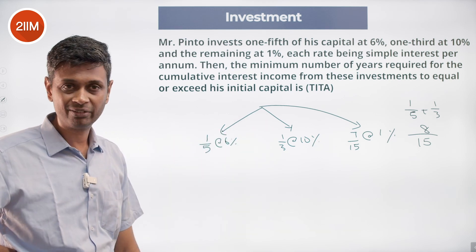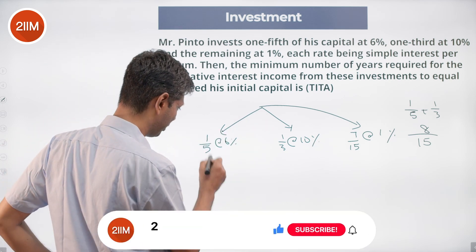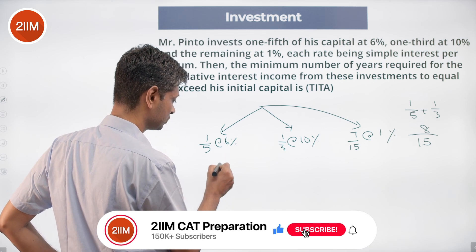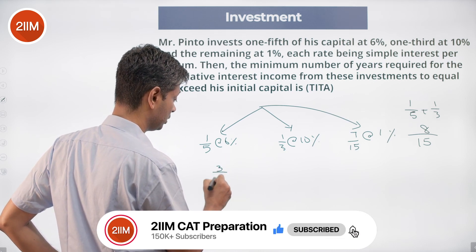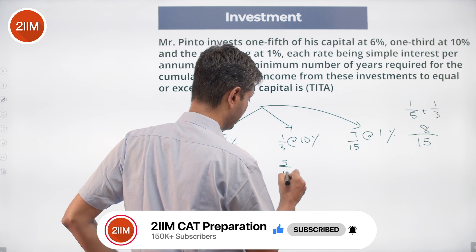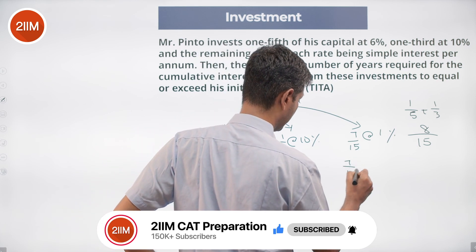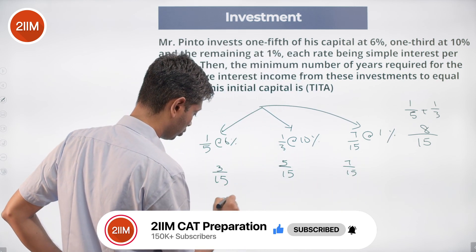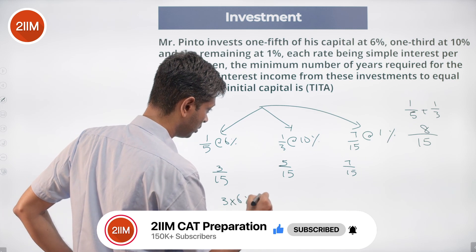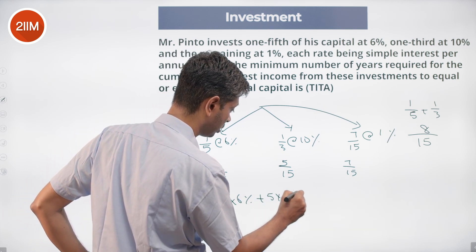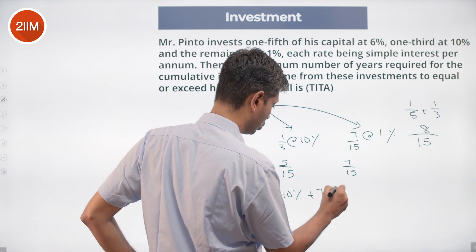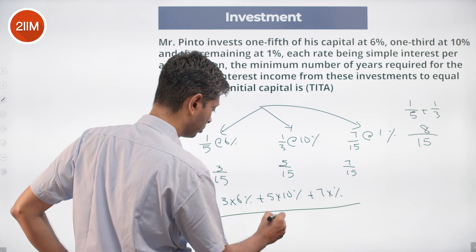1 by 5 is 3 by 15, 5 by 15, 7 by 15. So 3 into 6 percent plus 5 into 10 percent plus 7 into 1 percent divided by 15.